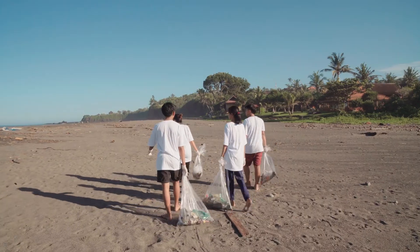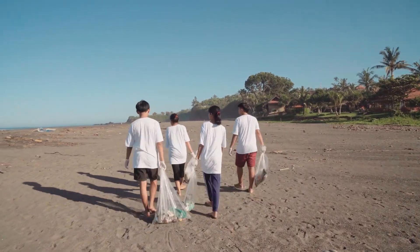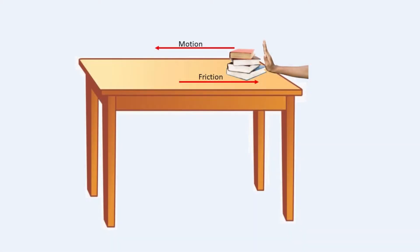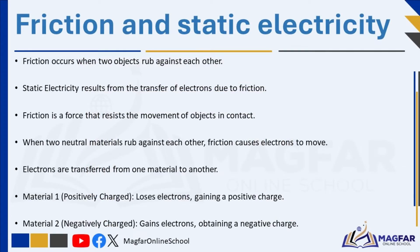When two neutral materials, each containing the same amount of electrons and protons, are rubbed against each other, friction results. Friction is a force that occurs when two objects rub against each other, slowing them down or stopping them. For example, when you push a book across a table, the rough surfaces create friction. The friction between the two materials causes electrons on the surface of one material to move to the surface of the other, meaning electrons are transferred between the two.